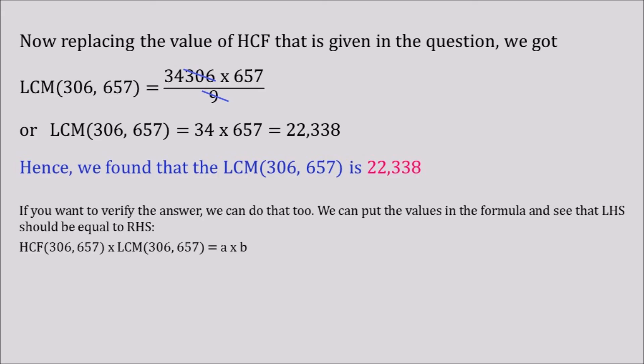Now putting the values, HCF of 306 and 657 into LCM of 306, 657 equals a into b. So left side of the equation is 9 into 22,338. 9 is the value of the HCF and 22,338 is the value of the LCM. And this equals a into b. So a is 306 into 657. We will see that both sides are 201,042 equals 201,042. We can see that left hand side equals right hand side. Hence our calculated LCM is 100% correct.